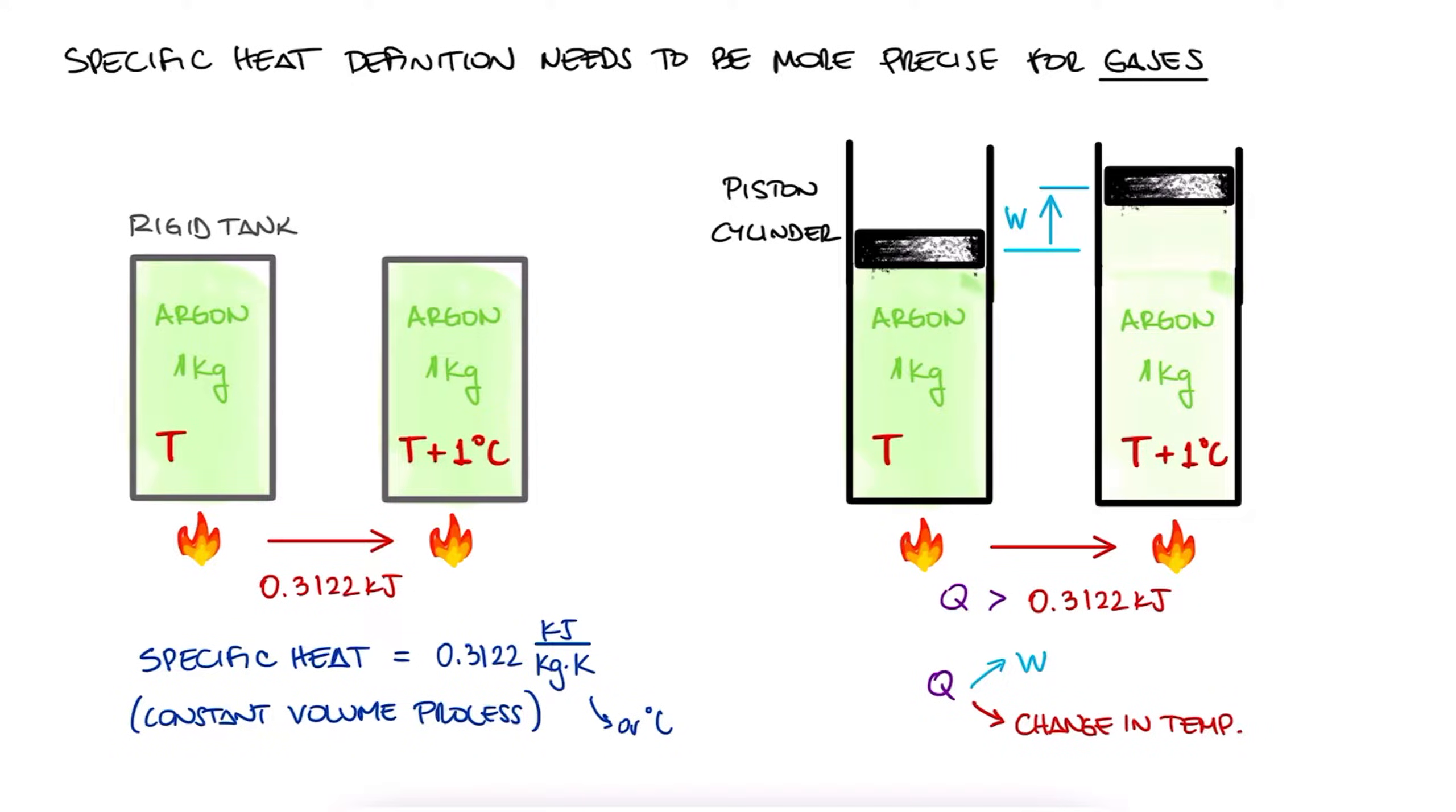And in fact it is! In the piston cylinder system, we need 0.523 kilojoules to make it go up by 1 degree Celsius. This means that for a constant pressure process, the specific heat is 0.523 kilojoules per kilogram Kelvin.